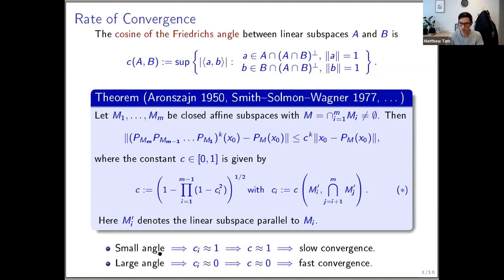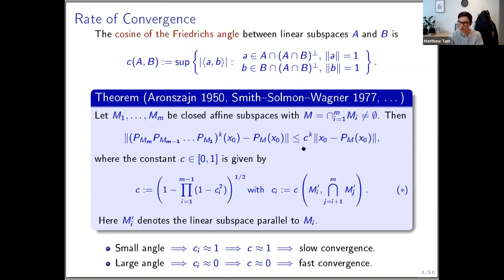The main takeaway is: if the angles are small, the c_i's are close to one, so c is also close to one, meaning slow convergence — the upper bound is not as good. Conversely, a large angle makes c close to zero and gives fast convergence. I should mention this is just an upper bound; it doesn't guarantee things converge that slowly, it's an upper bound on the rate, and we'll work with upper bounds today.